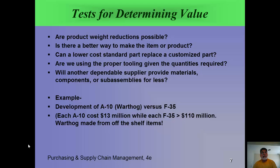As an example, there was a plane called the A-10, nicknamed the Warthog due to its appearance. It was made with off-the-shelf items — wheel assemblies, weapons, without extra high-tech components — a very solid airplane costing about $13 million per plane versus over $110 million for an F-35. The question is what additional value does the F-35 deliver, since the A-10, designed as a tank killer for slow flight, may have been better suited for use in places like Iraq and Afghanistan.